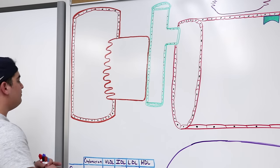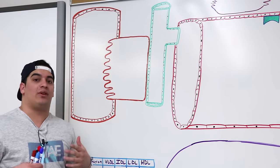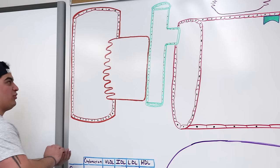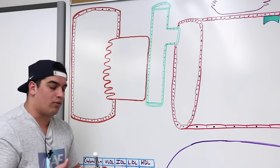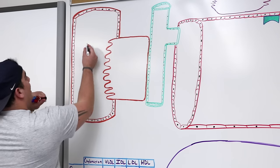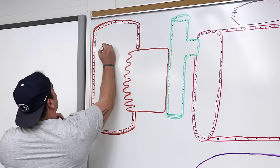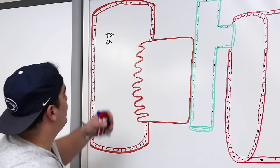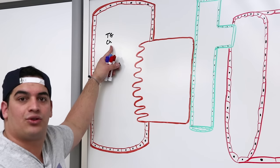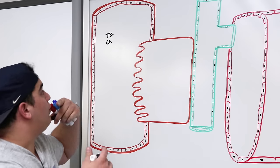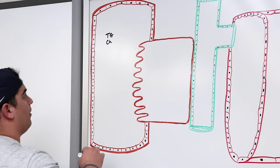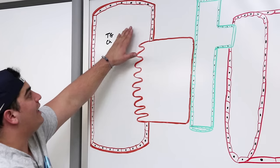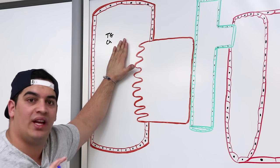Starting with the exogenous pathway, we zoom into the small intestine. Let's say we have some triglycerides and some cholesterol — cholesterol can exist in two forms: free cholesterol and cholesterol esters. A lot of our food is rich in cholesterol esters with a little bit of free cholesterol. Our stomach pushes these fats into the small intestine.